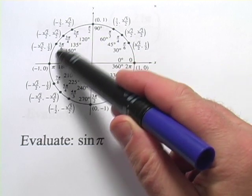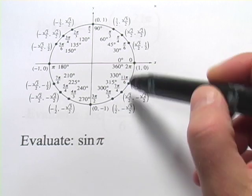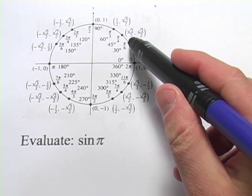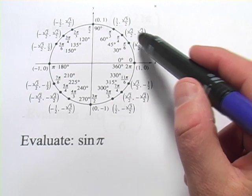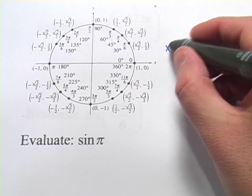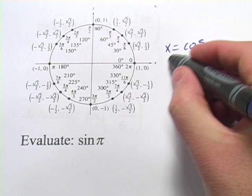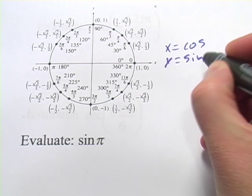and also the angle measures that go along with them, 30, 90, 180, 360. And then, for each of those points, we also have the x and y coordinates on the unit circle. And the x coordinates give you the value for cosine. The y coordinates give you the value for sine.